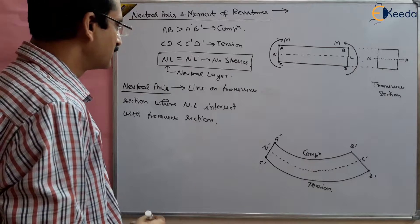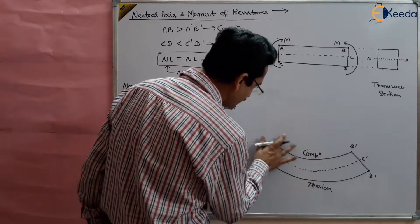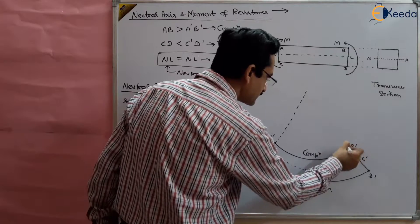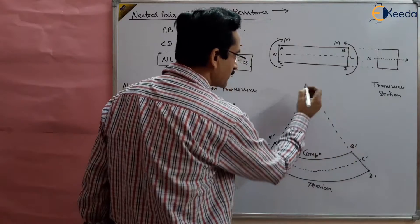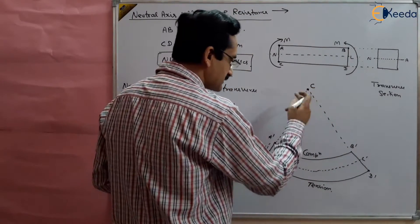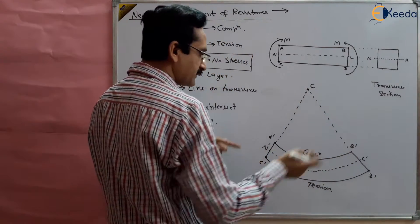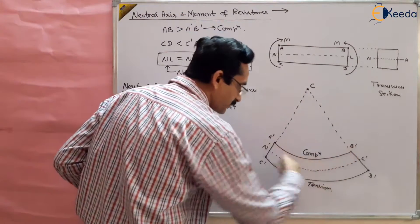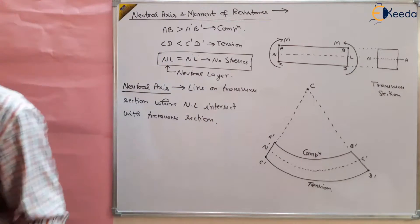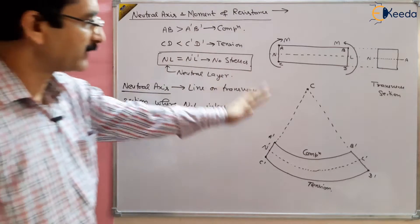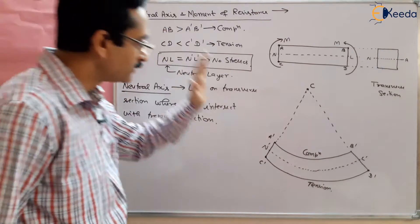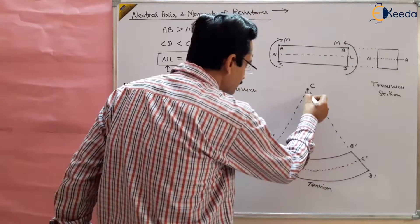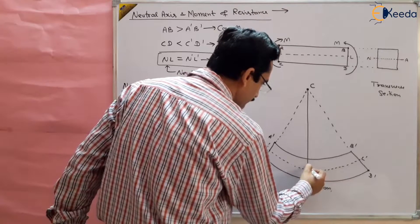If I take a point C from which this curvature is taking place, that C is the center of curvature of A'B', also of N'L', and also of C'D'. So this point C is the center of curvature of all these fibers, because in the theory of simple bending we assume that the center of curvature of all fibers after loading remains the same. Suppose R is the radius of curvature from the neutral layer.